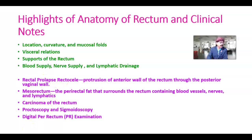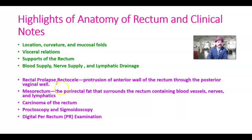We must know what is a rectocele. Rectocele is the protrusion or forward sagging of the anterior wall of the rectum, so the posterior vaginal wall may go to the introitus. It is seen in postmenopausal women, perineal injury, repeated vaginal delivery, certain types of cancer, or surgery. Mesorectum: the rectum has no mesentery, but there is peri-rectal fat surrounding the rectum containing blood vessels, nerves, and lymphatics — this is called the mesorectum. Resection of the rectum is performed through that plane.